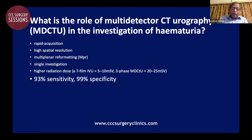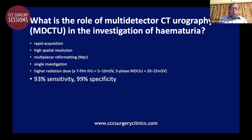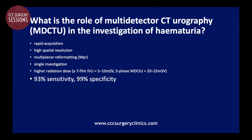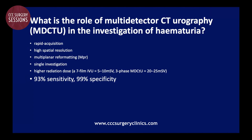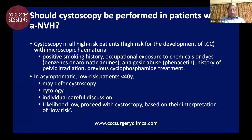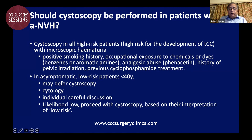CT urography should be done with caution, ensuring normal renal function and following the 10-day rule in women of childbearing age. It is a rapid acquisition, high spatial resolution, multi-planar reformatting, single investigation with a higher radiation dose than IVU but excellent sensitivity. Regarding whether cystoscopy should be performed in all patients with asymptomatic non-visible hematuria, risk categorization is important. Patients with a positive smoking history, occupational exposure, analgesic abuse, pelvic irradiation, or previous cyclophosphamide treatment should undergo cystoscopy.